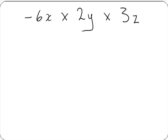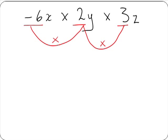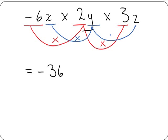Here we have minus 6x multiplied by 2y multiplied by 3z. Again, we multiply our numbers: minus 6 multiplied by 2 gives us minus 12, and minus 12 multiplied by 3 gives us minus 36. Then we multiply our letters: x multiplied by y multiplied by z gives us xyz. So the result is minus 36xyz.